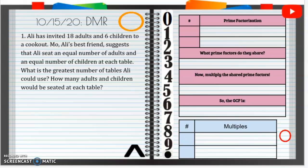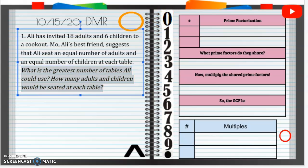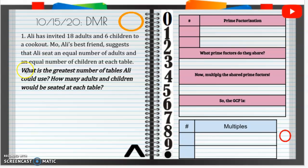Alright, so there's two parts here. We need to make sure that we are answering both questions at the end. So I'm going to put that in italics and bold because we need to figure out, first of all, what is the greatest number of tables and then how many adults and how many children at each table.